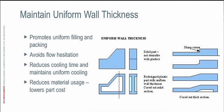Maintaining uniform wall thickness also helps you reduce cooling time and maintains uniform cooling. It can also help you reduce material usage — and all of those things help lower your part cost. If you look at the graphic on the right-hand side of this slide, you see on the top right a very abrupt transition from thin to thick with a sharp corner. That's a really bad thing.